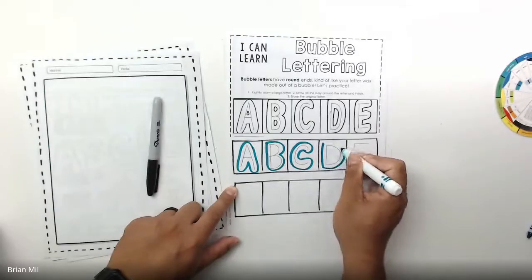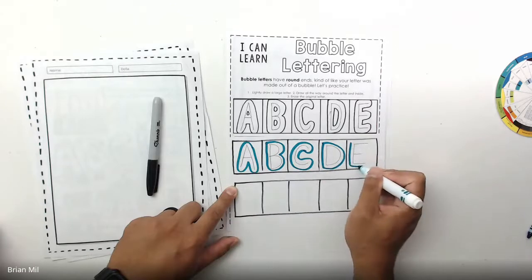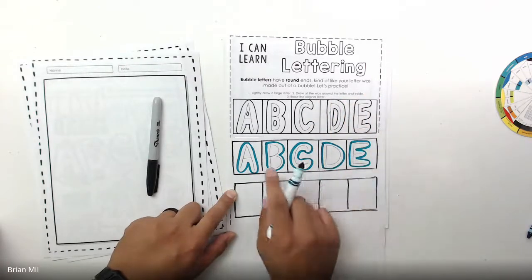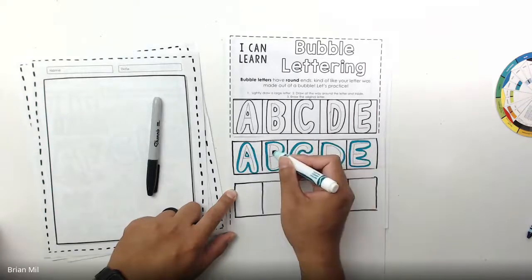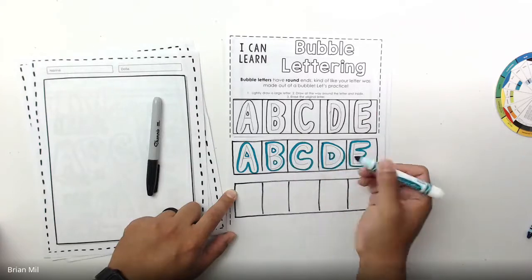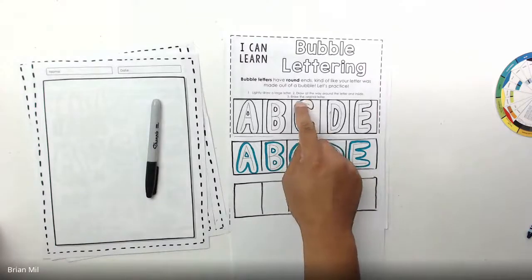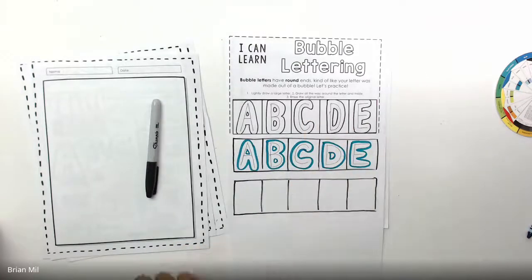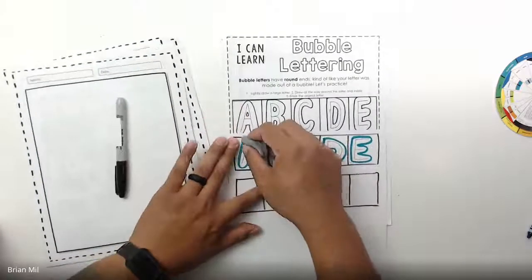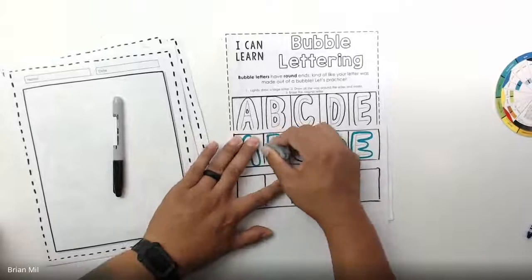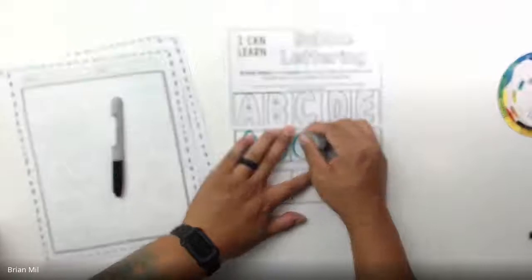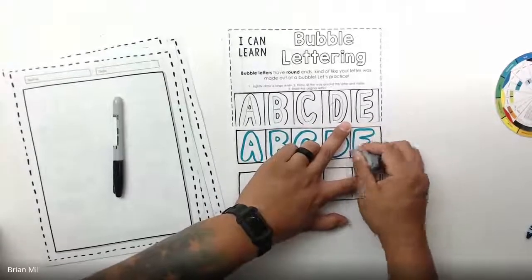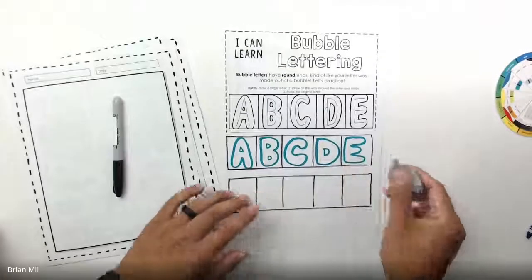Then the D and the E. Step two also says to draw all the way around the inside — the only inside letters you need to worry about are A, B, and D. Once done, step three says erase the original letter, which isn't possible if you used marker. Since I did it in pencil, I can erase and see the full bubble letter — and it looks really good.